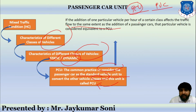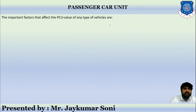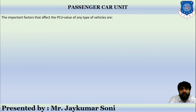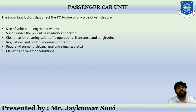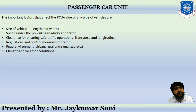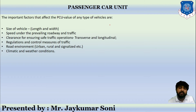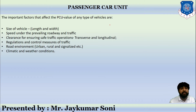If the addition of one vehicle per hour of a certain class affects traffic flow to the same extent as the addition of X passenger cars, that class is considered as having a PCU value of X. The important factors affecting PCU values include: size of the vehicle (length and width), speed under prevailing roadway and traffic conditions, clearance required for safe traffic in both transverse and longitudinal directions, traffic regulations and control measures, road environment (urban, rural, signalized intersections), and climatic and weather conditions.